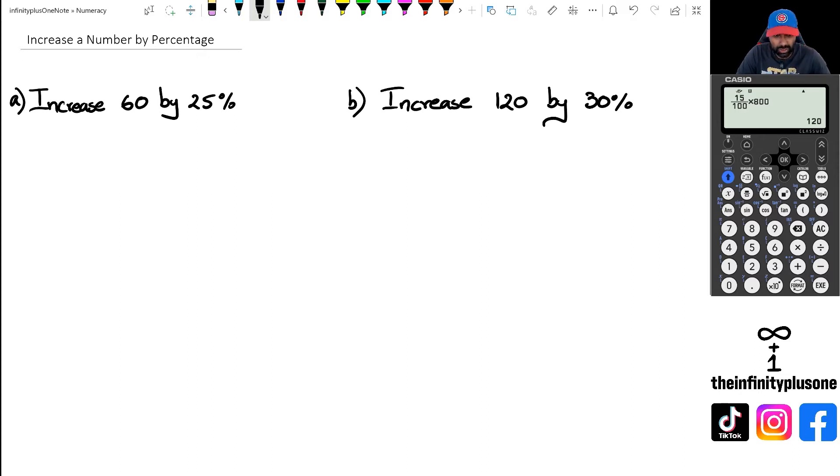Our first step is to figure out what is 25% of 60. Once we've figured that out, then we have to add it to the 60, because that's how we actually increase the number by 25%.